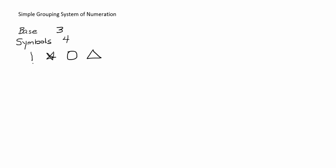The first symbol — the number 1 — represents 3 to the 0, which in our number system is 1. The second symbol, a star, will be 3 to the first power, which is 3. The third symbol, a circle, will be 3 squared, which is 9. And the fourth symbol, a triangle, will be 3 to the third power, which is 27.